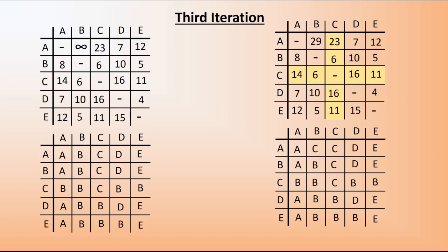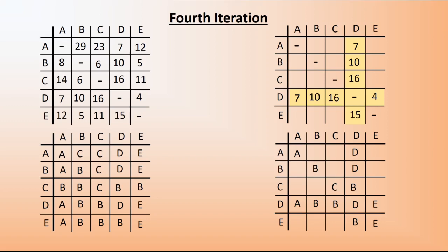On to the fourth iteration. We shade our D rows and columns and we're ready to go. I won't go through every single part — feel free to have a go yourself. There is a change in one place, changing to D. Then, continuing and only mentioning when there is a change: the 12 has changed to 11, since 7 plus 4 is 11, so that changes to a D. Only two changes in the fourth iteration.